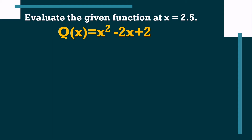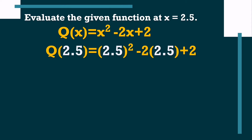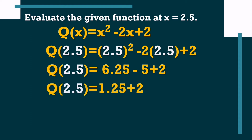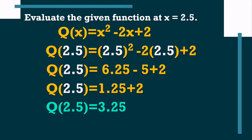First, write the given function: q(x) equals x squared minus 2x plus 2. Then replace x with the given value, 2.5. So it becomes q(2.5) equals 2.5 squared minus 2 times 2.5 plus 2. Simplify: 2.5 squared equals 6.25; negative 2 times 2.5 equals negative 5. So 6.25 minus 5 is 1.25, plus 2 gives us the final answer: q(2.5) equals 3.25.